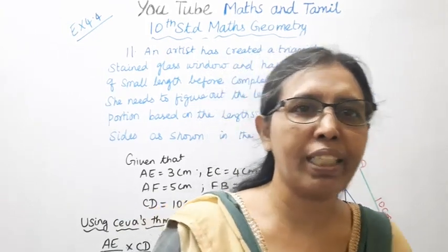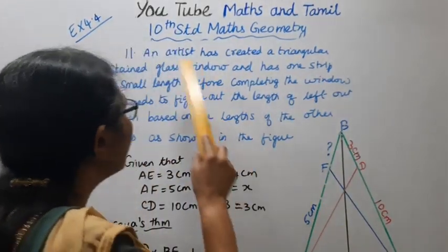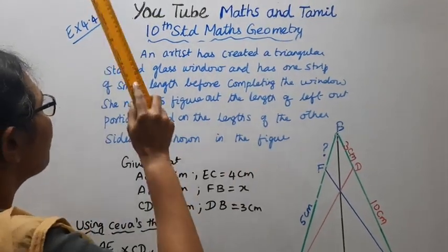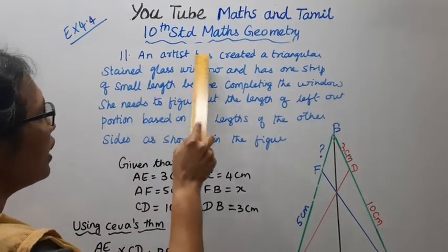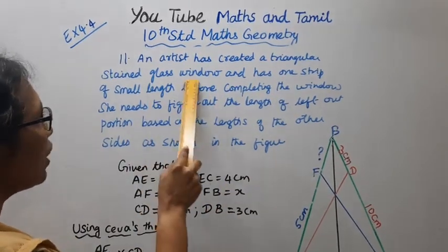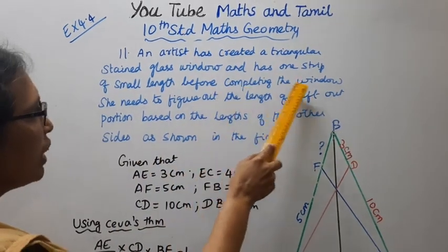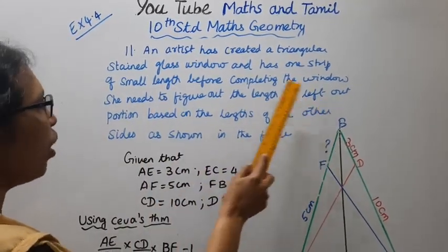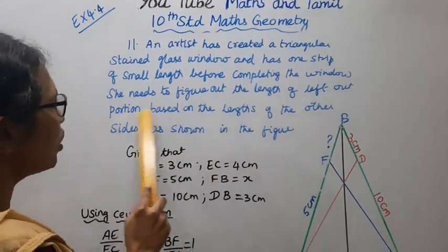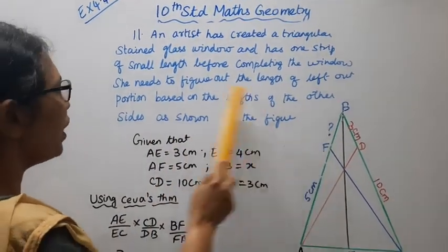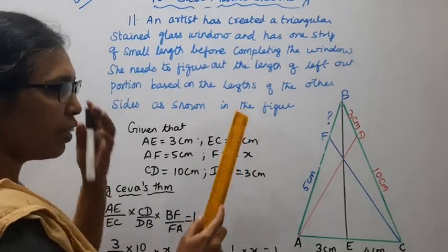Hello students, welcome to Maths and Tamil channel. 10th standard maths geometry exercise 4.4. An artist has created a triangular stained glass window and has one strip of small length before completing the window. She needs to figure out the length of left out portion based on the lengths of the other sides as shown in the figure.